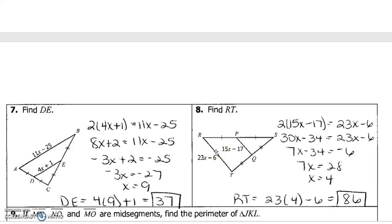Alright, number 9. Number 9 gives you some information about this triangle within a triangle and some of the other legs. So let's look at what they want. They want us to find the perimeter of triangle J, K, L. So that's the big triangle. But we need to first find x in order to do that. So let's look at it.